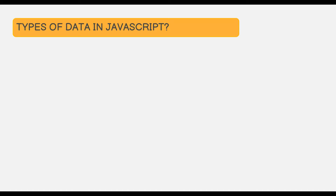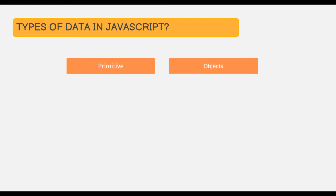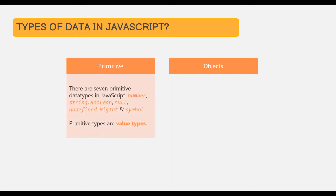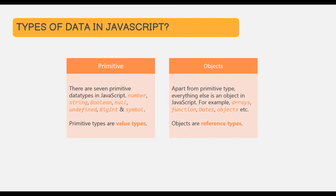In JavaScript, a value or data can be classified into two types: primitive type and objects. We have seven primitive data types: number, string, boolean, null, undefined, BigInt, and symbol. And apart from these seven primitive data types, everything else is an object in JavaScript. So an array is an object, a function is an object, a date is an object. Remember that primitive types are value types; on the other hand, objects are reference types.